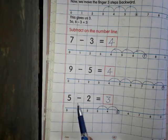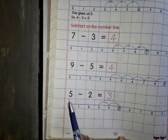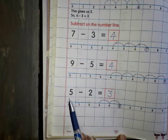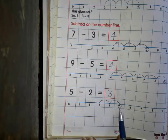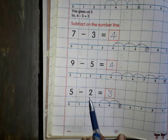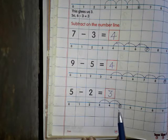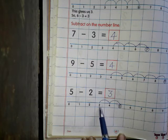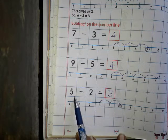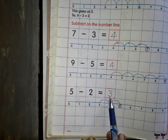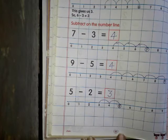5 minus 2. हम अपनी finger कहां रखेंगे? 5 पर। 5 पर हम आ गए। अब यहां से 2 step backward जाना है — 1, 2. 2 step backward आए तो कहां पहुँच गए? 3. 3 answer आ गया। 5 minus 2 is equal to 3.